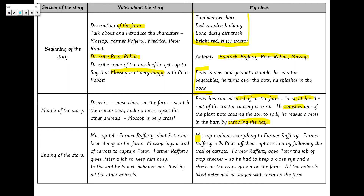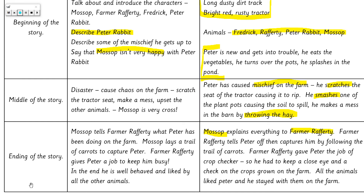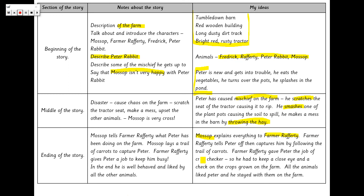In the ending of my story, Mossop plays a really important part — he ends up telling Farmer Rafferty everything. Farmer Rafferty tells Peter off and catches him by following a trail of carrots across the farm. Farmer Rafferty gives Peter the job of crop checker, because he thinks it's really important that Peter has a job on the farm to stop him from getting into mischief. Peter has to keep a close eye on all the crops that have been grown on the farm.